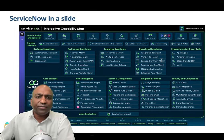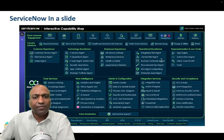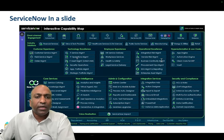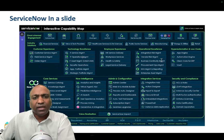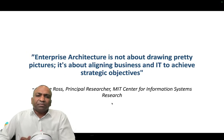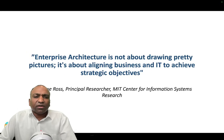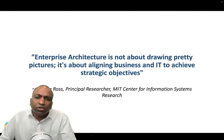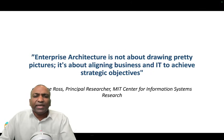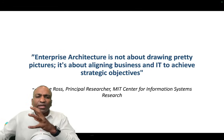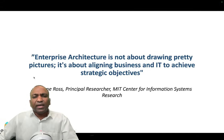The cool thing with the ServiceNow low-code platform — which we are partners of — is that all of these products in each box talk to each other on a common data model, which is pretty cool. We can orchestrate all the workflows with intelligence very beautifully. The demo I'm going to show involves multiple products talking to each other to enable these cool functionalities. When talking about architecture, business and IT architecture have to work together — enterprise architecture is not about pretty pictures, it's about aligning business and IT to achieve strategic objectives.